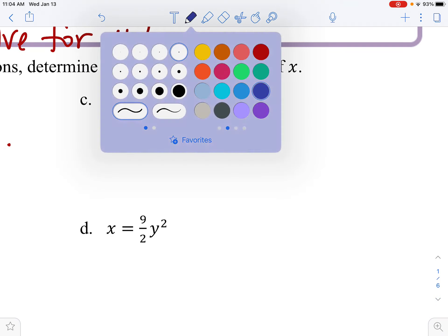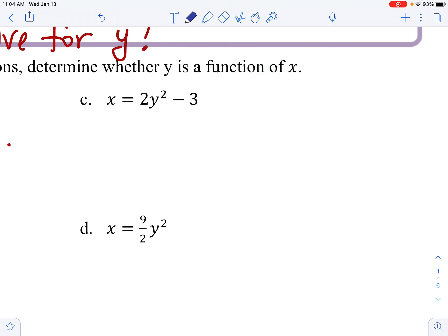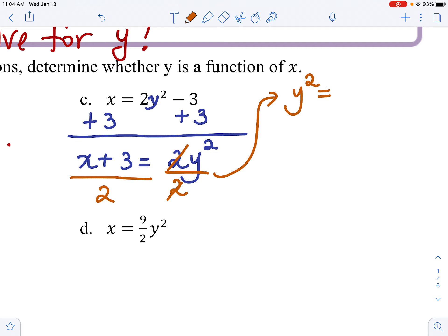Let's look at c. First you have to solve this for y. So if I solve this for y, I will have to first add 3 to both sides. I'll get x plus 3 is equal to 2y squared. Divide both sides by 2. 2 cancels out, leaving us with y squared, which is equal to x plus 3 over 2. Now to get rid of squaring, what should you do to both sides? To get rid of squaring, we need to take square root of both sides.